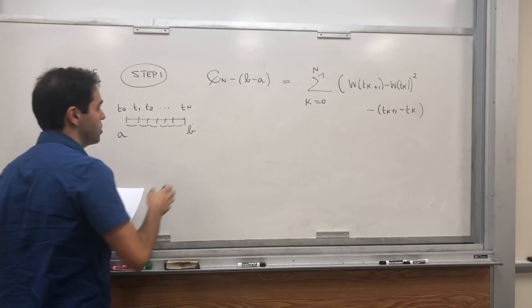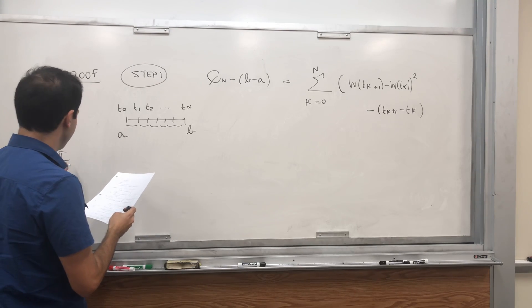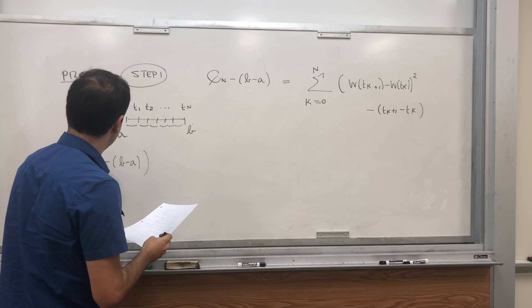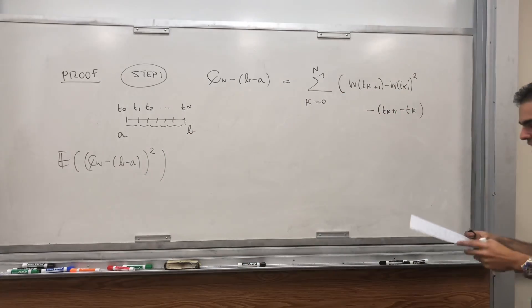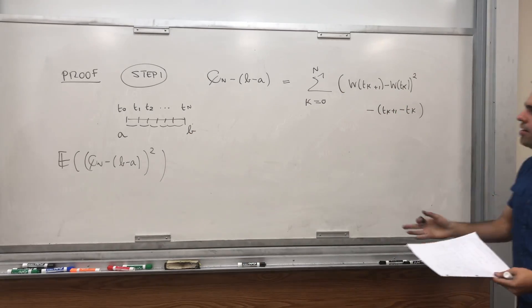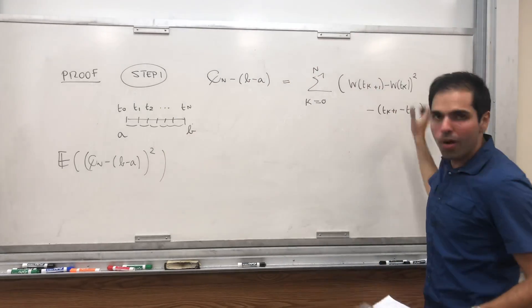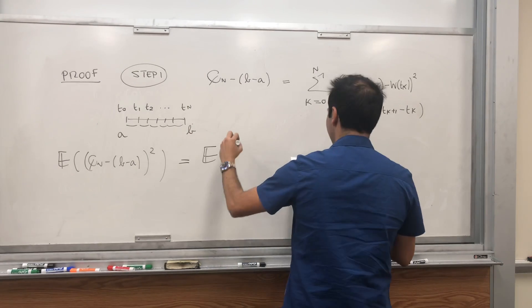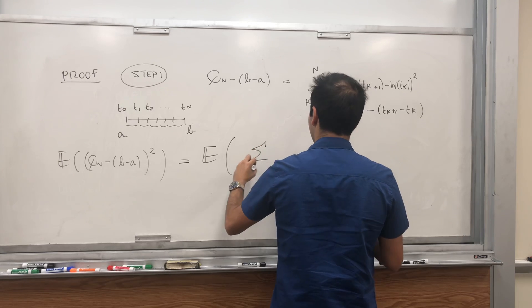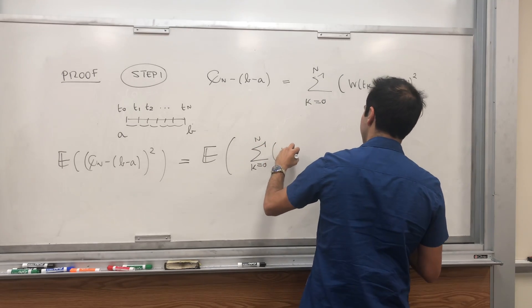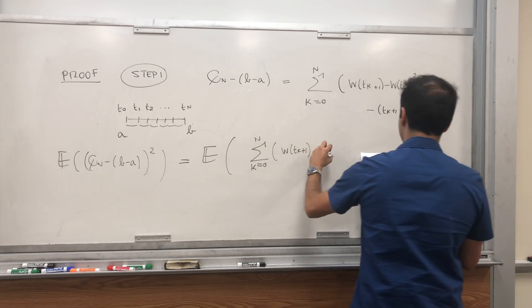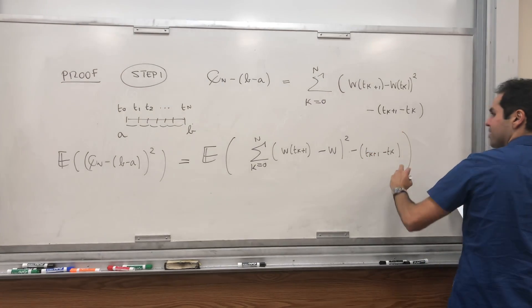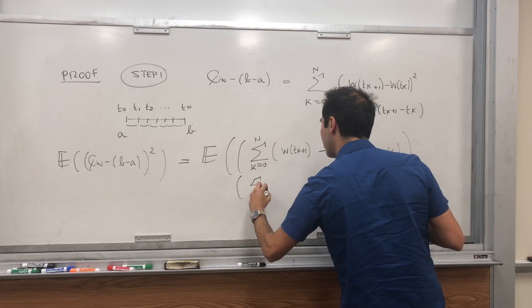Now let's take the expectation of (Q_n minus (b minus a))². We have to take this sum and multiply by the same sum, so we need to foil it out. It's really the sum over k from 0 to n of [(W_{t_{k+1}} minus W_{t_k})² minus (t_{k+1} minus t_k)] times the same thing but summing over j. So you're taking this big expectation, and it's a product of two sums — like (a + b)(c + d) — and you foil it out.